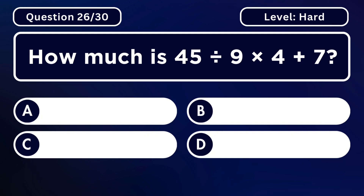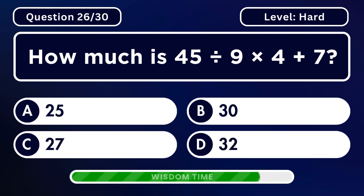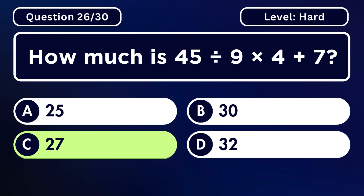How much is 45 divided by 9 multiplied by 4 plus 7? Answer C. 27.